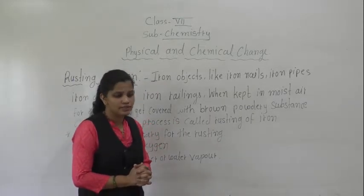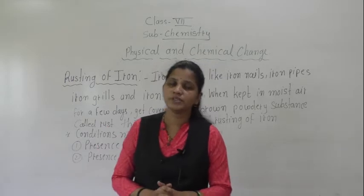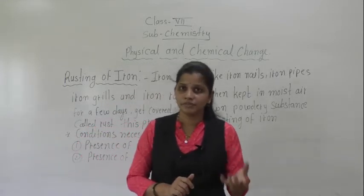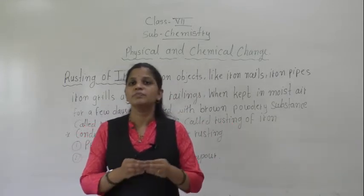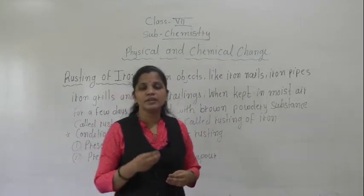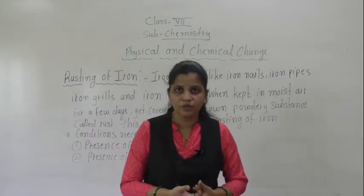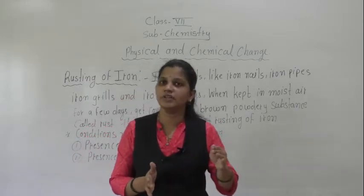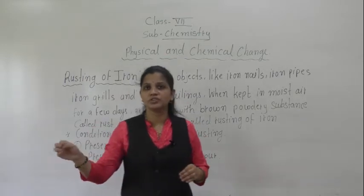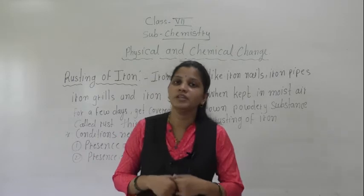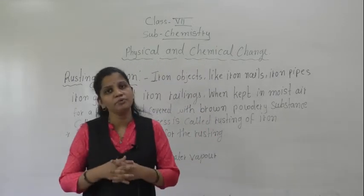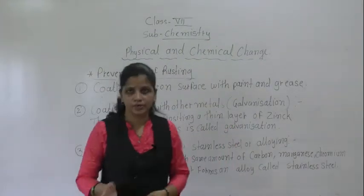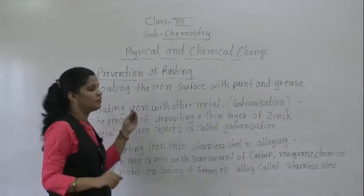Now the next point: how to prevent rusting. We are using iron for things like grills and safety doors, and daily they come in contact with air and water, so we have to prevent rust. If it rusts and we don't pay attention, it will damage those objects. So we have to prevent rust formation. Some methods are given in your textbook, and now we will discuss those. The next point is the prevention of rusting.